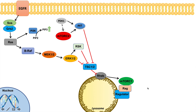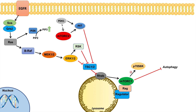When mTOR complex 1 is activated, it can lead to several downstream effects. Notably, mTOR complex 1 inhibits autophagy through a couple of different mechanisms. Additionally, mTOR complex 1 leads to the phosphorylation and activation of P70S6 kinase, which then drives activation of pyrimidine synthesis pathways and protein synthesis pathways.